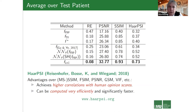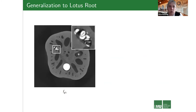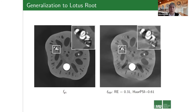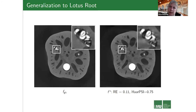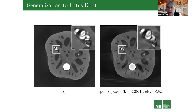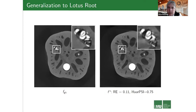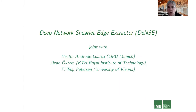For the generalization test, we use lotus root data — something the network has never seen — with a 30-degree missing angle. Even though the network was only trained on human CT images, comparing filter back projection, TV sparse regularization (blurry in some areas), the end-to-end approach, and our combined Learning the Invisible approach, the results are still quite nice. This demonstrates good generalization across very different data types.